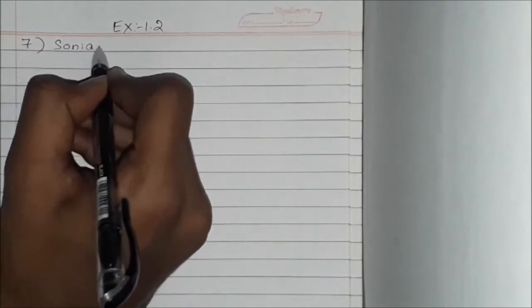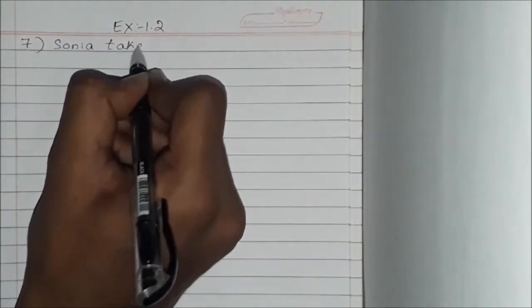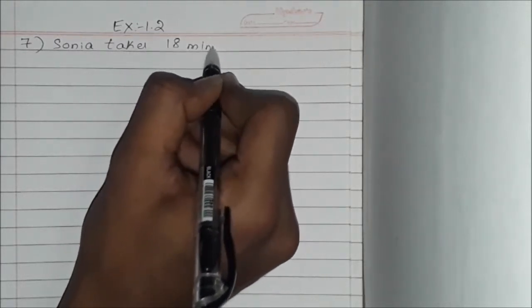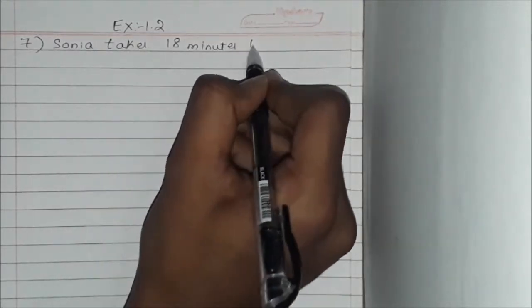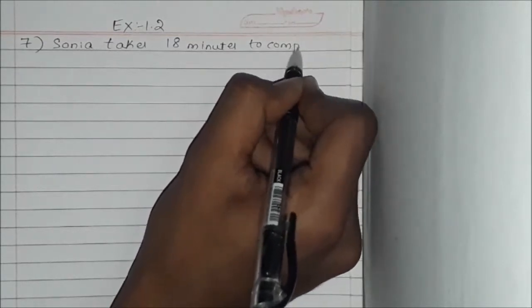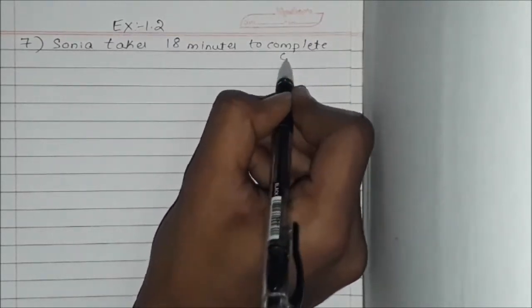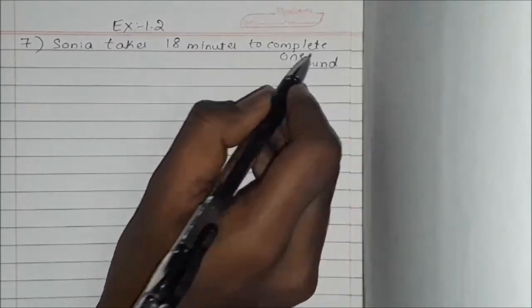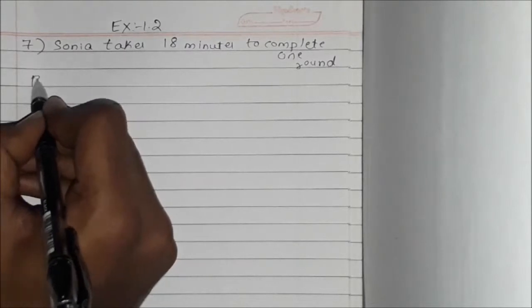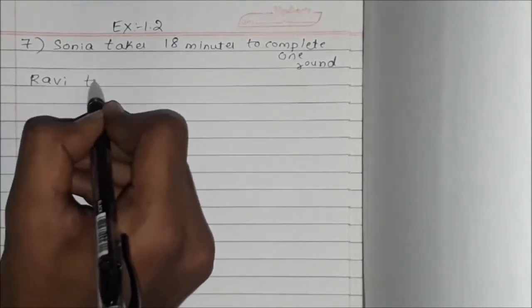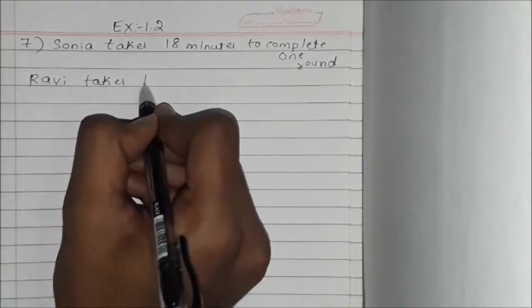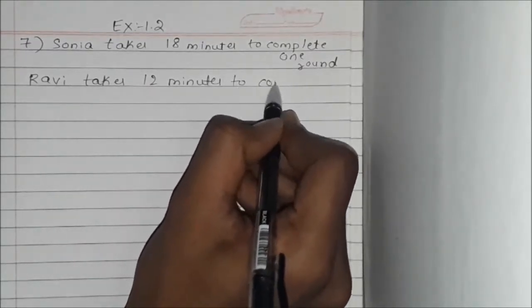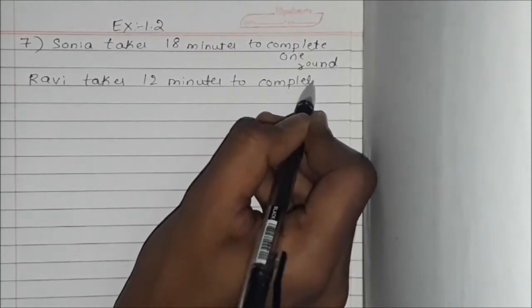Sonia takes 18 minutes to complete one round, whereas Ravi takes 12 minutes to complete one round.